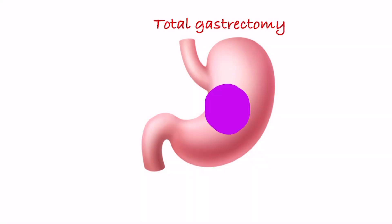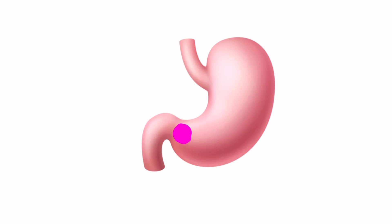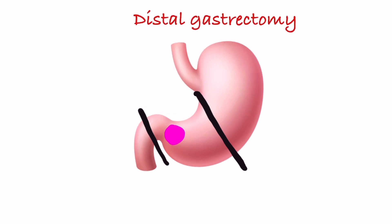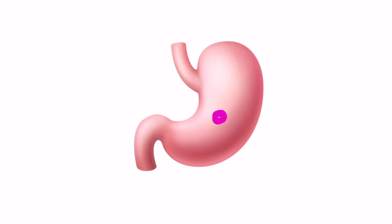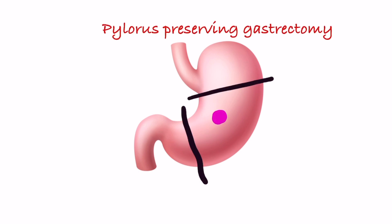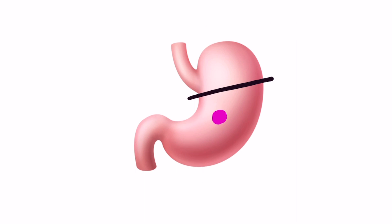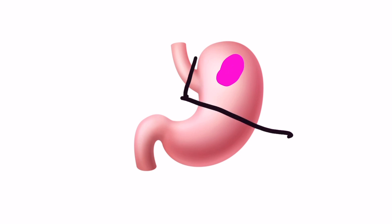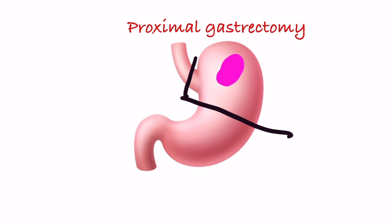In large tumors involving the body, total gastrectomy is done — meaning total resection of the stomach including the cardia and pylorus. In tumor of the pyloroantral region where proximal margin is achievable, distal gastrectomy is done, meaning stomach resection including the pylorus while the cardia is preserved. In standard gastrectomy, two-thirds of the stomach is resected. In small tumors in the middle of the stomach, pylorus-preserving gastrectomy can be done, preserving the upper third of the stomach and the pylorus along with a portion of the antrum. In tumors involving the proximal part, proximal gastrectomy is done — stomach resection including the cardia while the pylorus is preserved.